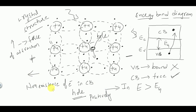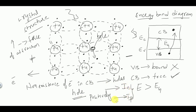Electrons and holes move in opposite directions. The electron motion is towards the positive terminal and the motion of holes is towards the negative terminal, but the current given by them will be in the same direction. Even though the motion of electrons and holes is in opposite directions, the current contributed by them is in the same direction.